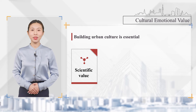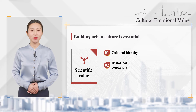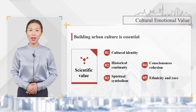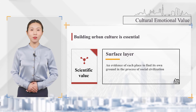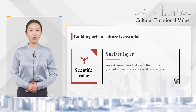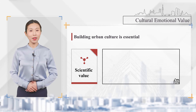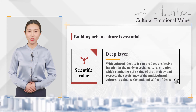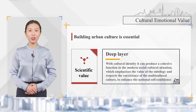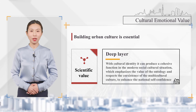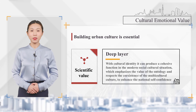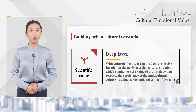Emotional value in cultural emotional value is cultural identity, which mainly refers to historical continuity, cultural symbolism, consciousness cohesion, ethnicity and race, etc. On the surface layer it is evidence of each place finding its own ground in the process of social civilization. At the deep layer, cultural identity can produce an inclusive conclusion in modern social culture, which emphasizes the value of ontology and respects the co-existence of multicultural culture to enhance national self-confidence. Emotional identity of the old city plays a vital role in the construction of urban culture.